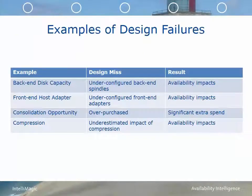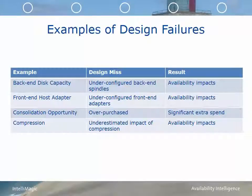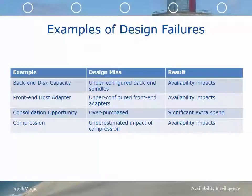In this section I'm going to go over a few examples of design failures. The examples are about back-end disk capacity and under-configuring the back-end. I'm also going to look at a front-end host adapter example, a consolidation opportunity, and an IBM SVC compression example. All of these had either some availability impacts or extra spend, and the result was a failure.